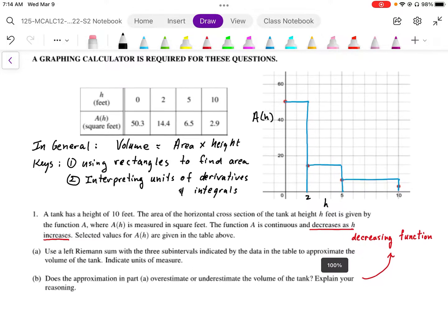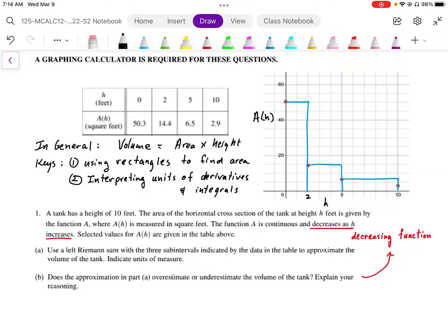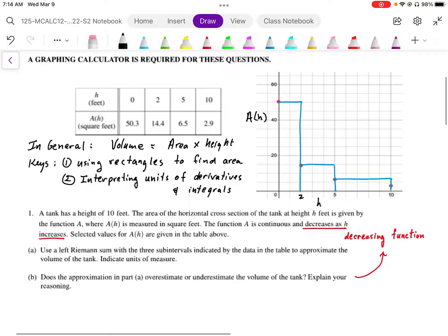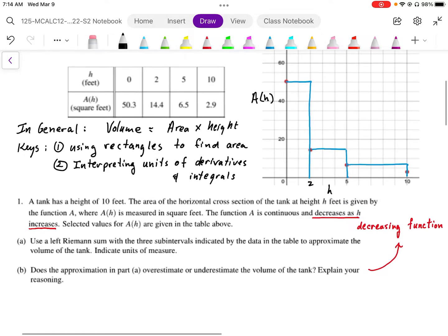Question number one says: A tank of height 10 feet, the area of the cross sections of the tank at height h feet is given by the function A. So A(h) is measured in square feet. The function A is continuous and decreases as h increases. Now that's an important point for part B.